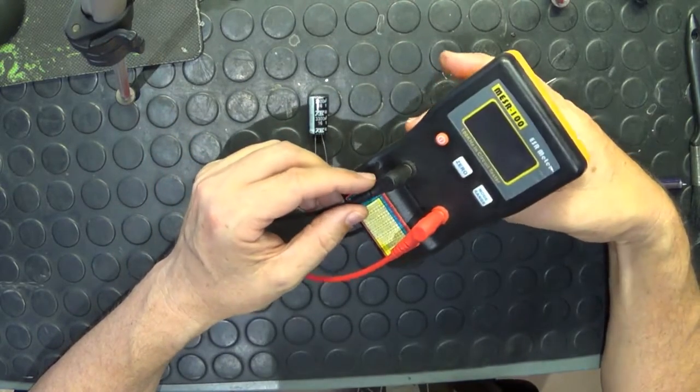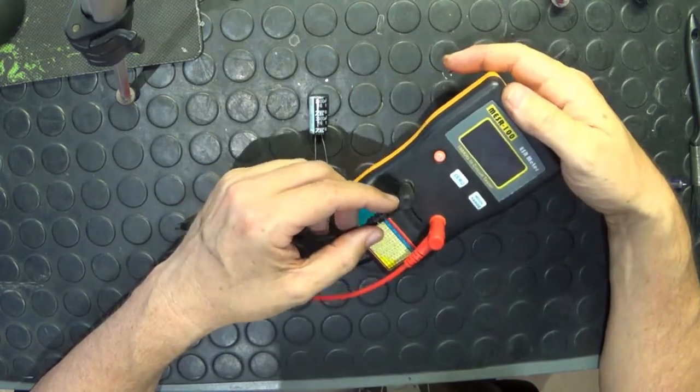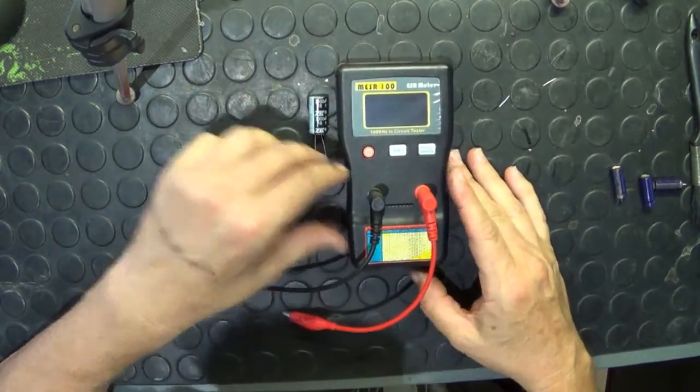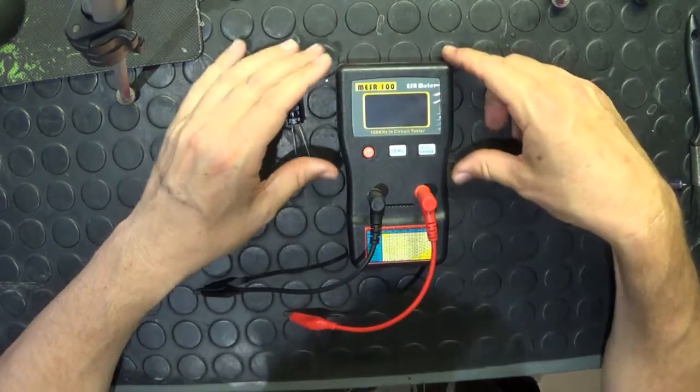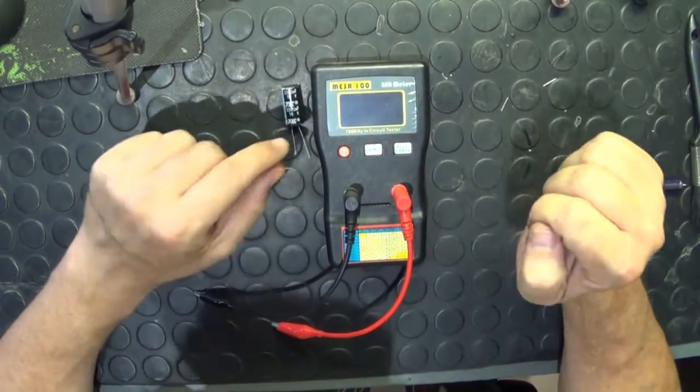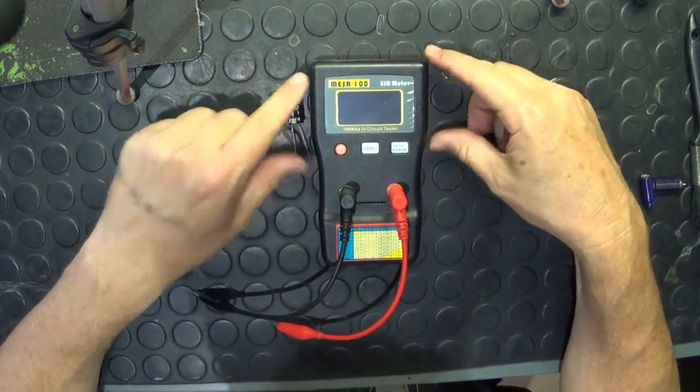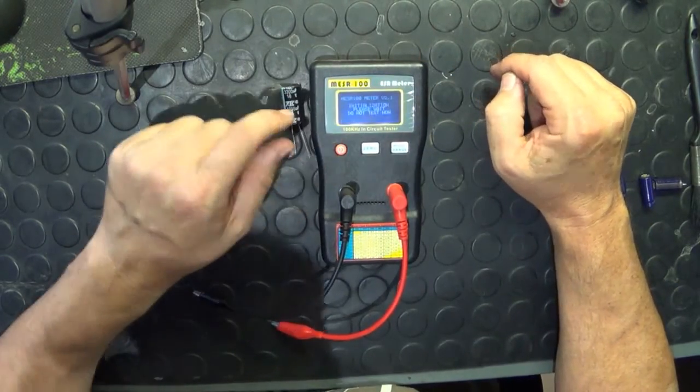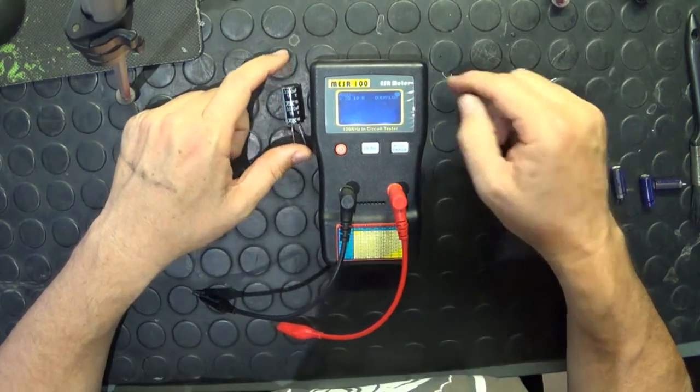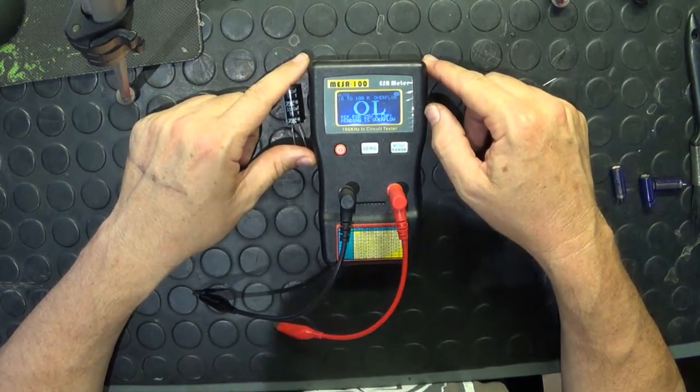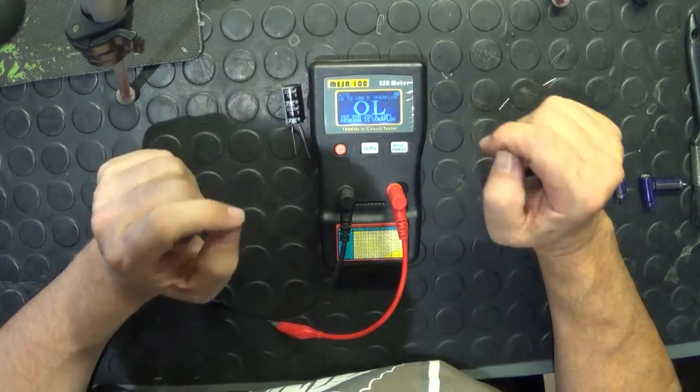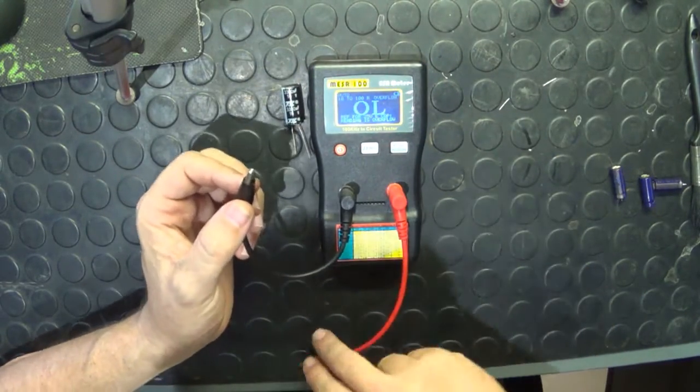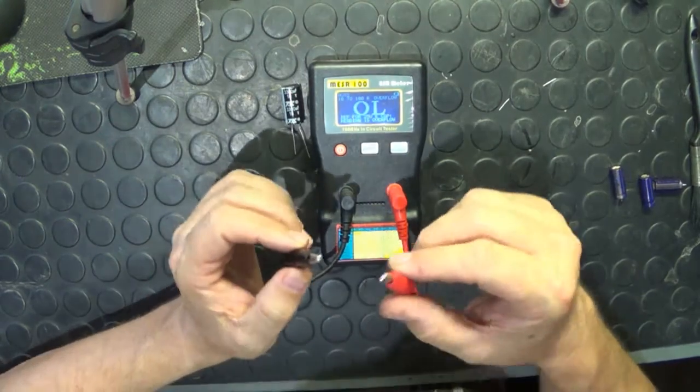I'm just going to show you very quickly how do we go about measuring a capacitor to see whether a capacitor is faulty or not using an ESR meter. If I go and switch this ESR meter on, basically the first thing you need to do is to short out the terminals.